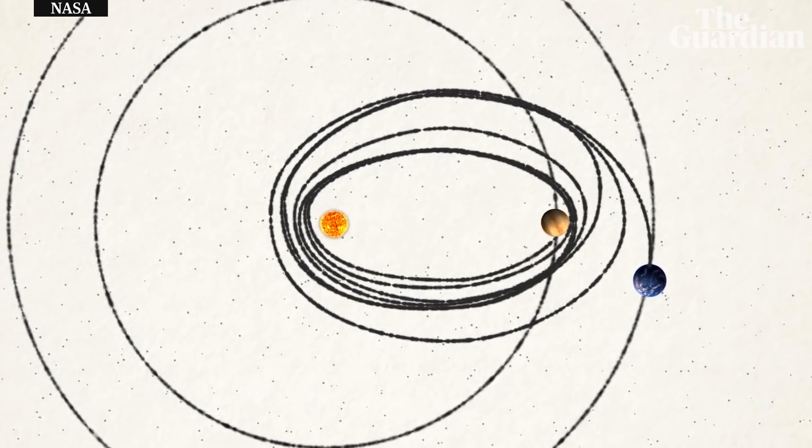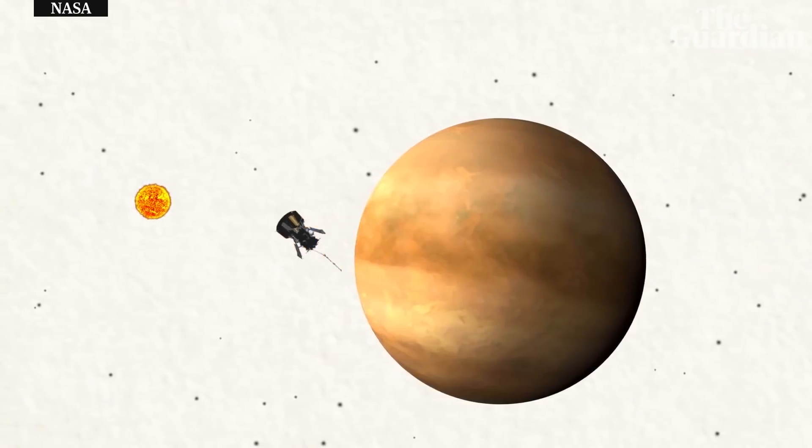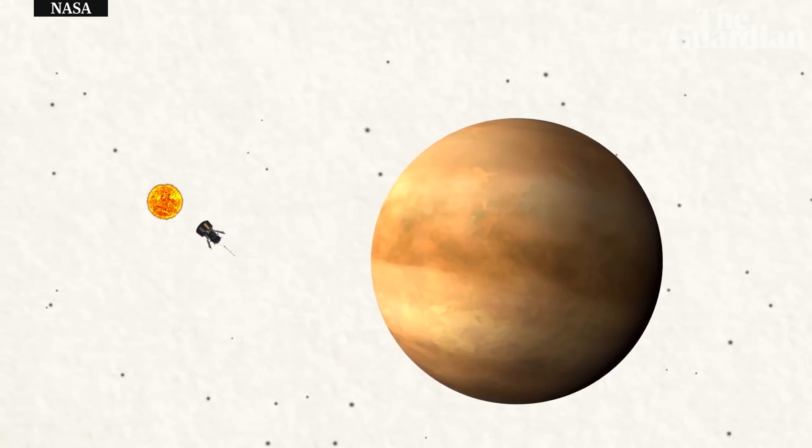In this case, rather than speeding up the spacecraft, as in a typical gravity assist, Venus slows down its sideways motion, so the spacecraft can get close to the Sun.